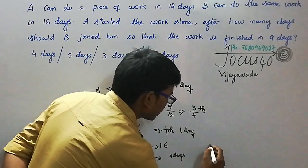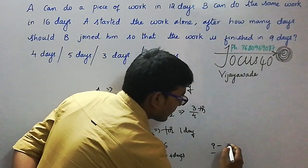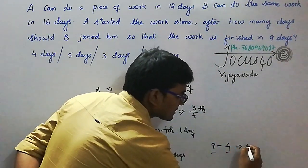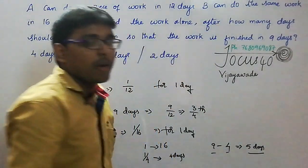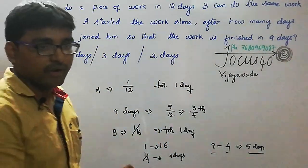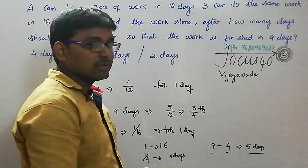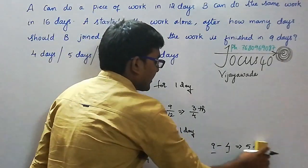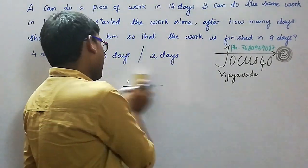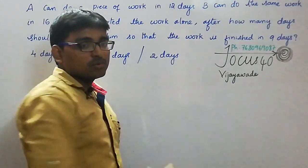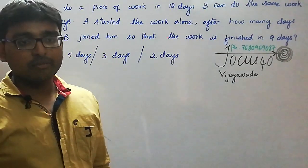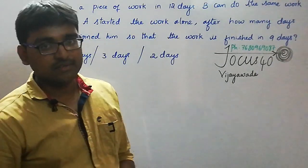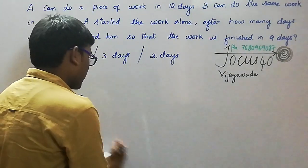The total number of days is 9, and B worked for 4 days, so B joined the work after 5 days. This is the basic method to get the answer step by step. But in a competitive exam this approach takes 1 to 2 minutes. By using the shortcut method we can achieve this in less than 15 seconds.